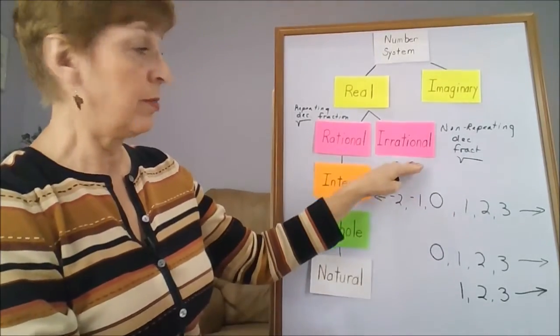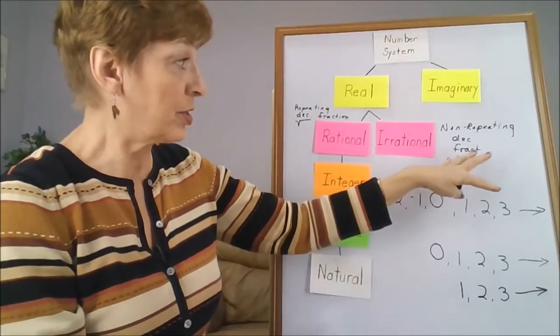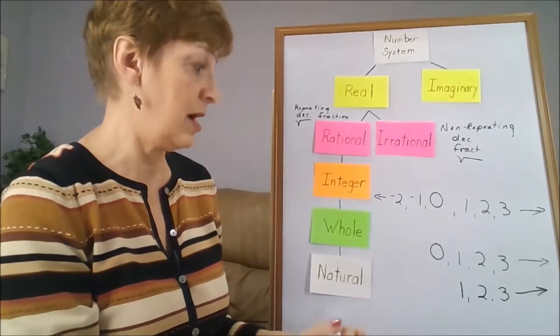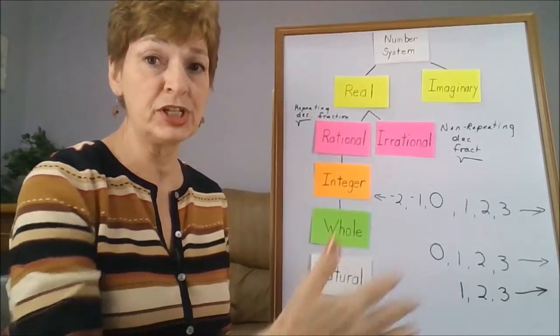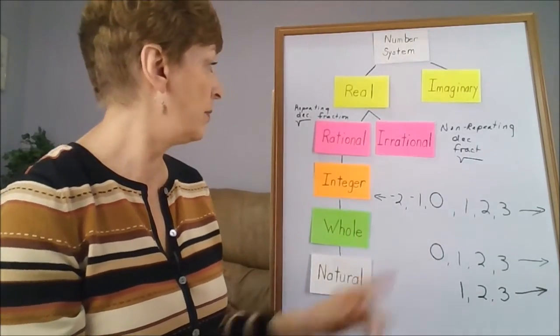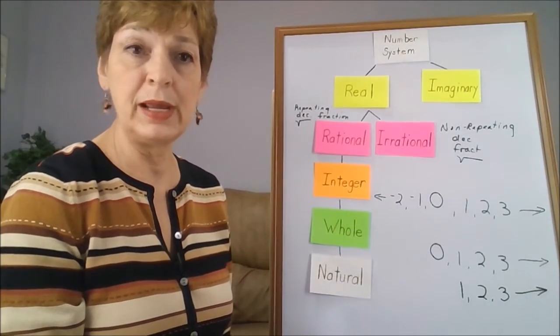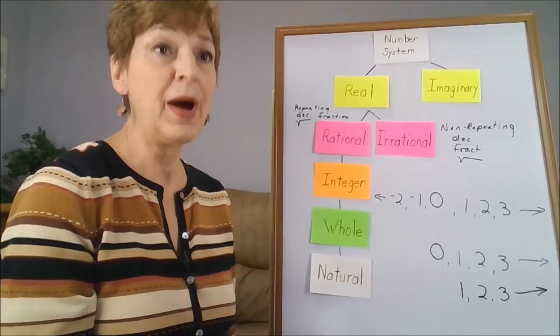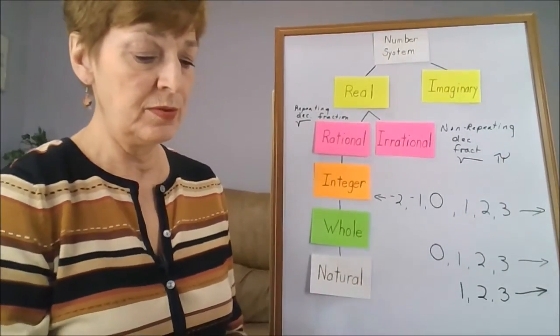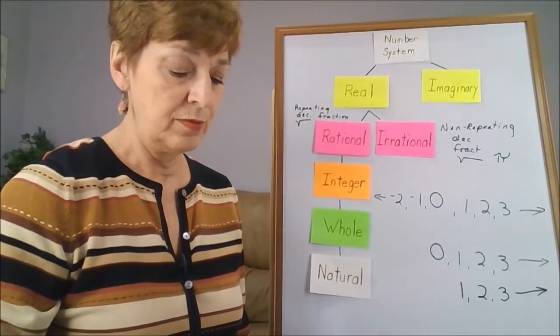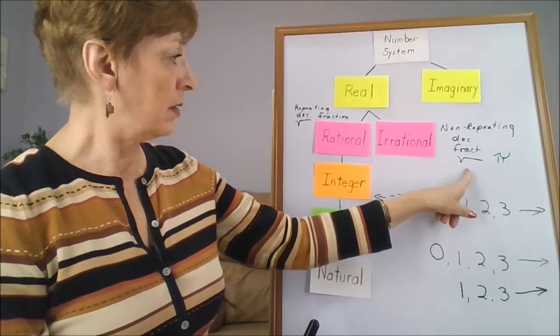So the irrational, as the name would suggest, don't make a whole lot of sense. These are crazy guys that have no pattern to the repetition, they're just kind of random. An example of an irrational number would be the pi in the symbol pi that's used for circumference of a circle.